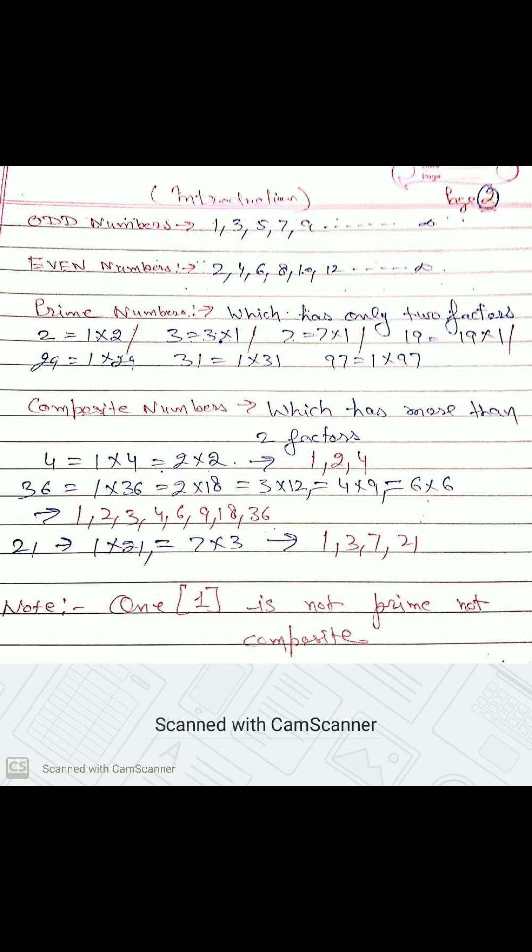Now come to composite numbers, which has more than two factors. Four: one into four, two into two. It means three factors: one, two, four. This is composite number.